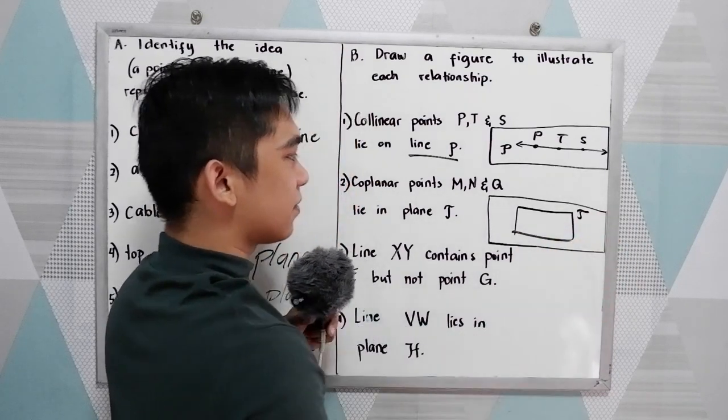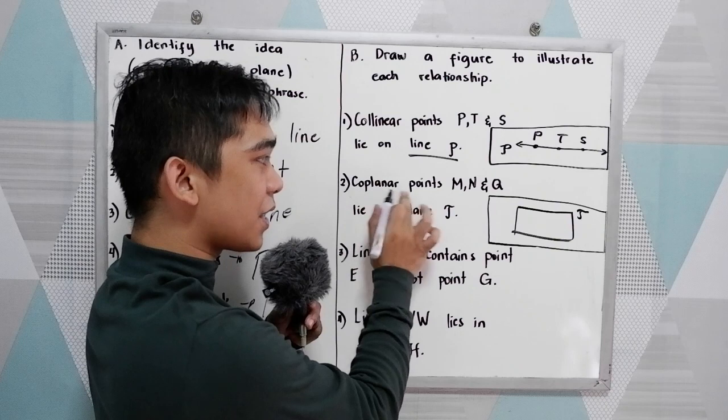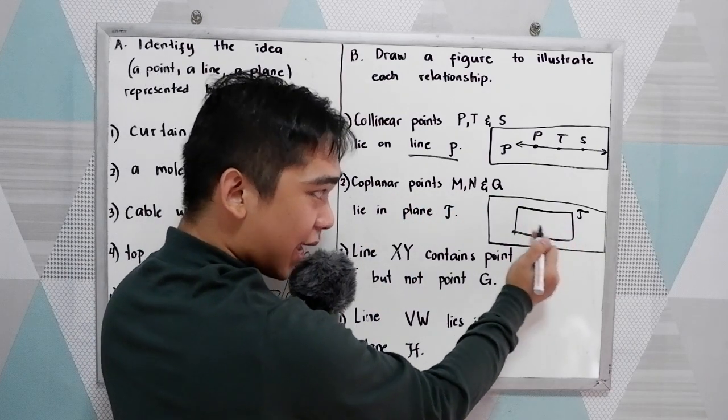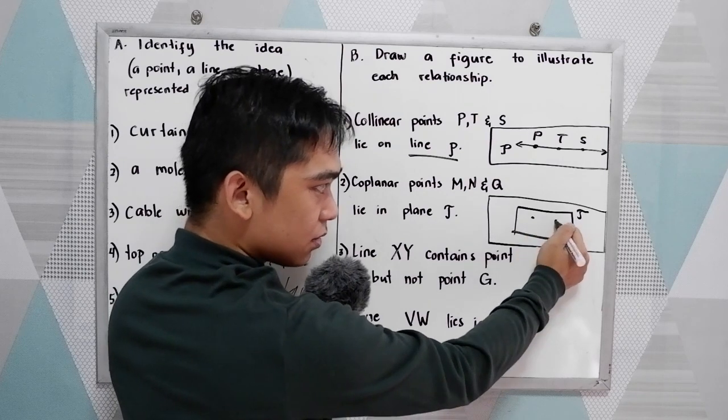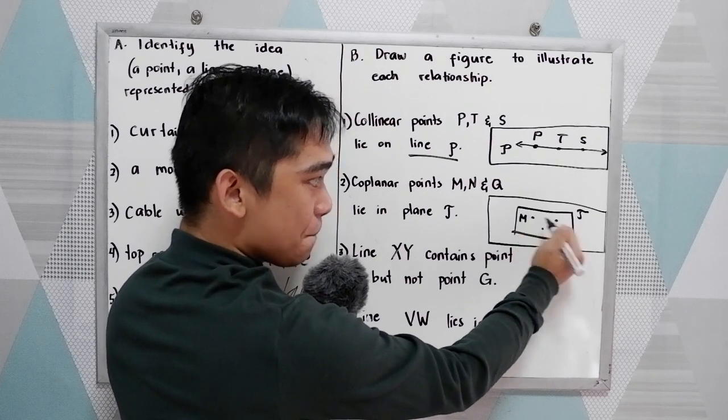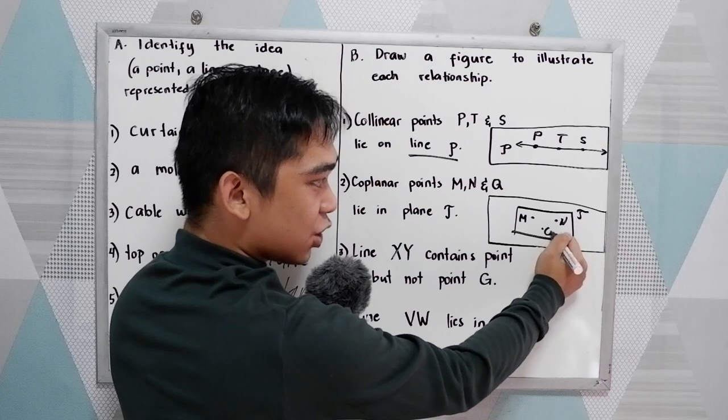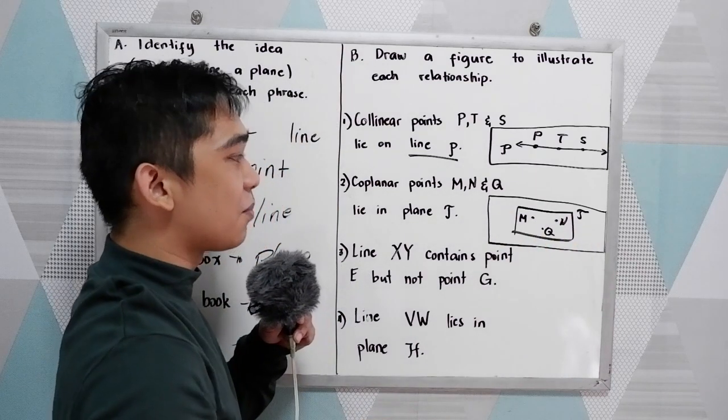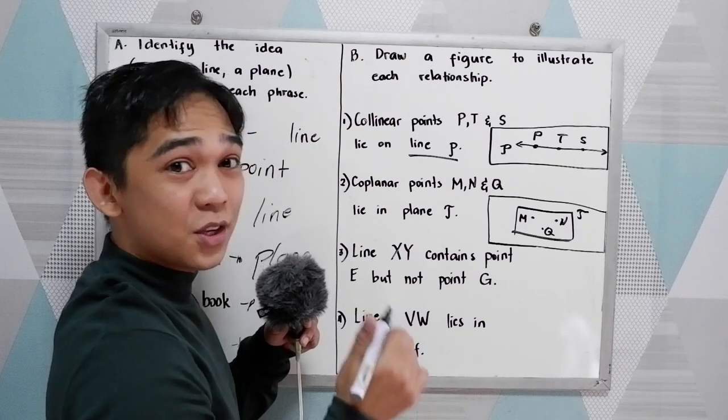We'll name it as T. And we have coplanar points. Inside our plane, plane T, we have the three points: M, N, and Q. This will be your answer, the answer in number two. Did you get the same answer?